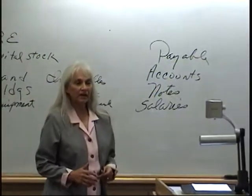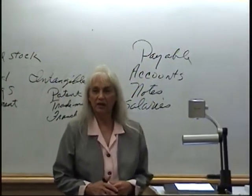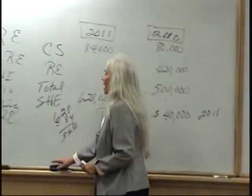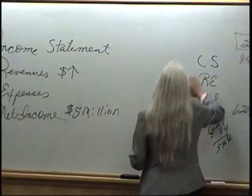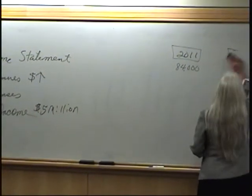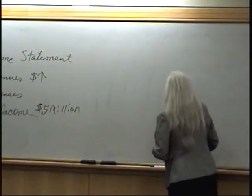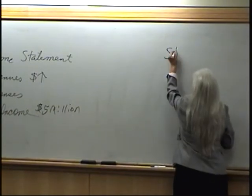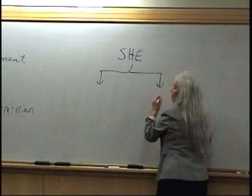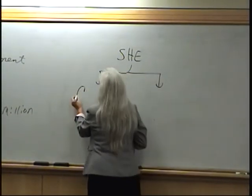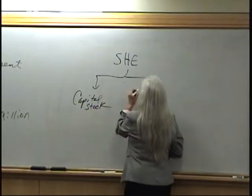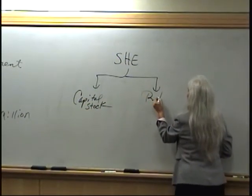Now you already know what makes up stockholders' equity. If I were going to look at the stockholders' equity here, my stockholders' equity has two major parts. What are the two major parts? Capital stock, and then the other one is retained earnings.